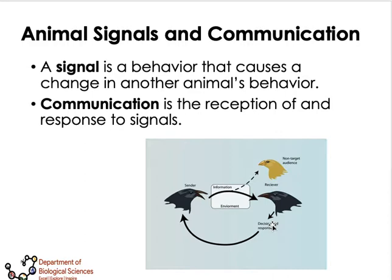Aside from directed movements, certain animal behaviors involve making signals and communicating. A signal is a behavior that causes a change in another animal's behavior, and particular species have unique sounds or signal types. Communication is the reception and response to signals. When a signal is sent by a sender, it can be received only by the target species; non-target species may receive the signal but do not respond, as they have their own signaling mechanisms.